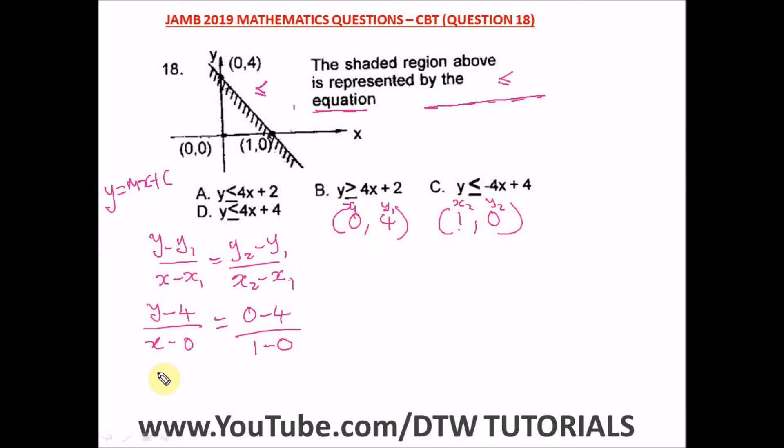From here we have y minus 4 over x equals minus 4 over 1. Let's cross multiply. In cross multiplying, we get y minus 4 equals minus 4x.